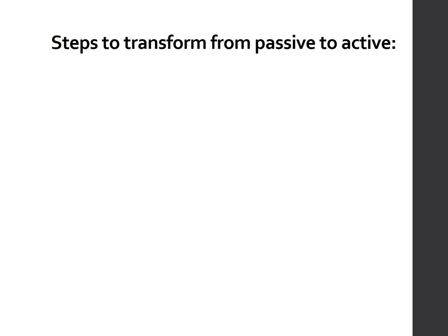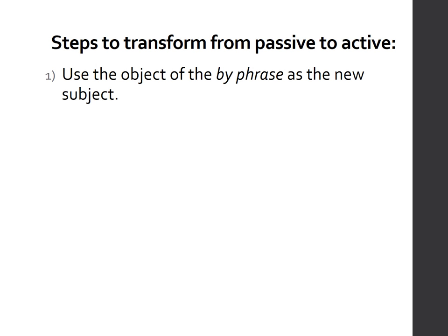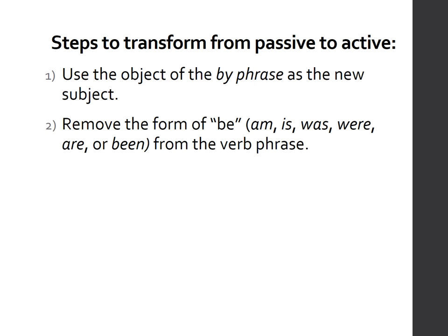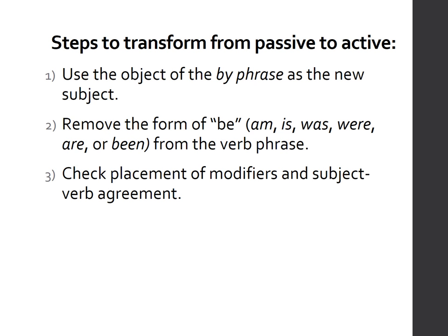Now, steps to transform from passive to active: you will simply reverse the steps. Use the object of the by-phrase as the new subject — it will be the doer. For the verb: in the passive form you have a verb phrase, so simply remove the form of 'be' — am, is, was, were, been — and use the verb that will suit the new subject in active voice. As always, check that modifiers are placed correctly and that subject and verb agree.